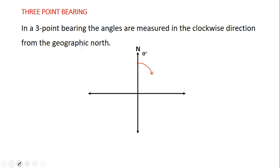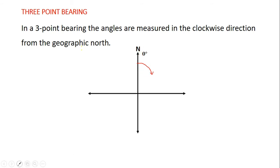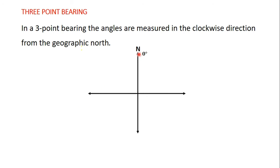What you need to know about three-point bearings is that beginning from the north, the angle there is zero. Between north and east is 90 degrees. Moving clockwise from east to south is another 90 degrees, giving 180 degrees. From south to west is another 90 degrees, giving 270 degrees. From west back to north is another 90 degrees, giving 360 degrees. These values are very important — you need to know them.